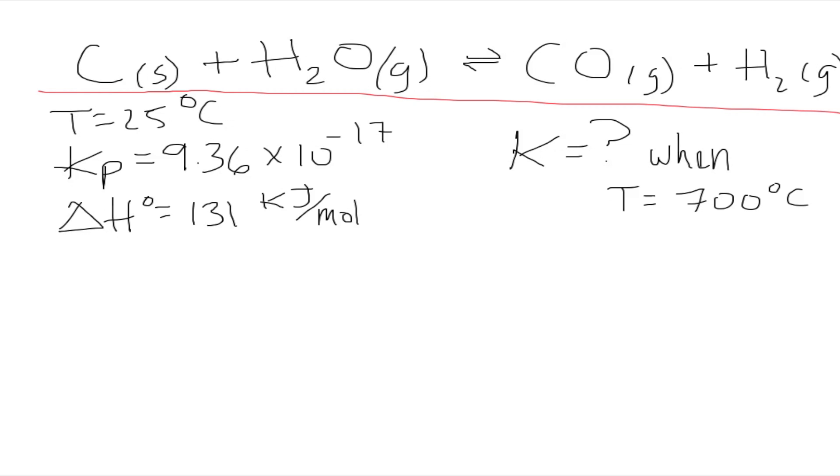The question is what will K be when the temperature reaches 700 degrees Celsius. If we look at this, we can notice that this fulfills all of our requirements. We have our temperature 1 right here, temperature 2, we have a change of enthalpy, and we have K1. All we need to do is find the value of K2.